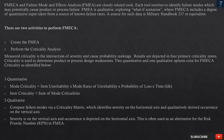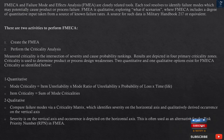FMECA and Failure Mode and Effects Analysis (FMEA) are closely related tools. Each tool resolves to identify failure modes which may potentially cause product or process failure. FMECA is qualitative, exploring what-if scenarios, where FMECA includes a degree of quantitative input taken from a source of known failure rates. A source for such data is Military Handbook 217 or equivalent. There are two activities to perform FMECA: Create the FMECA, and Perform the Criticality Analysis. Measured criticality is the intersection of severity and cause probability rankings. Results are depicted in four primary criticality zones.